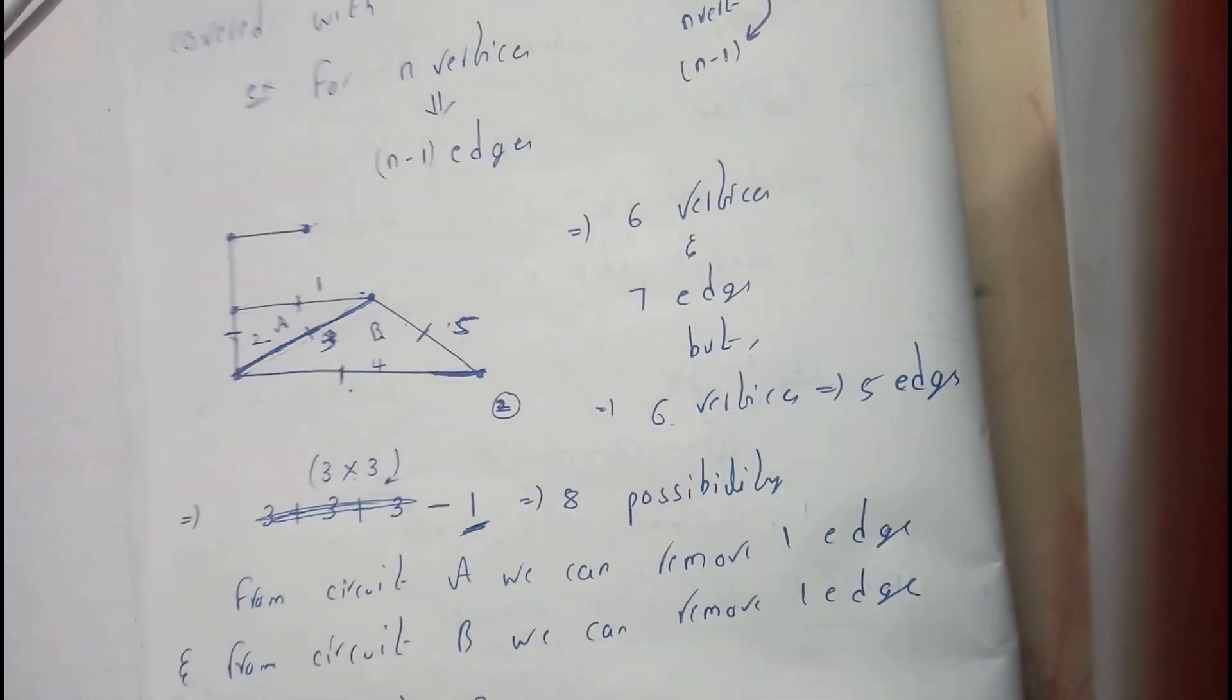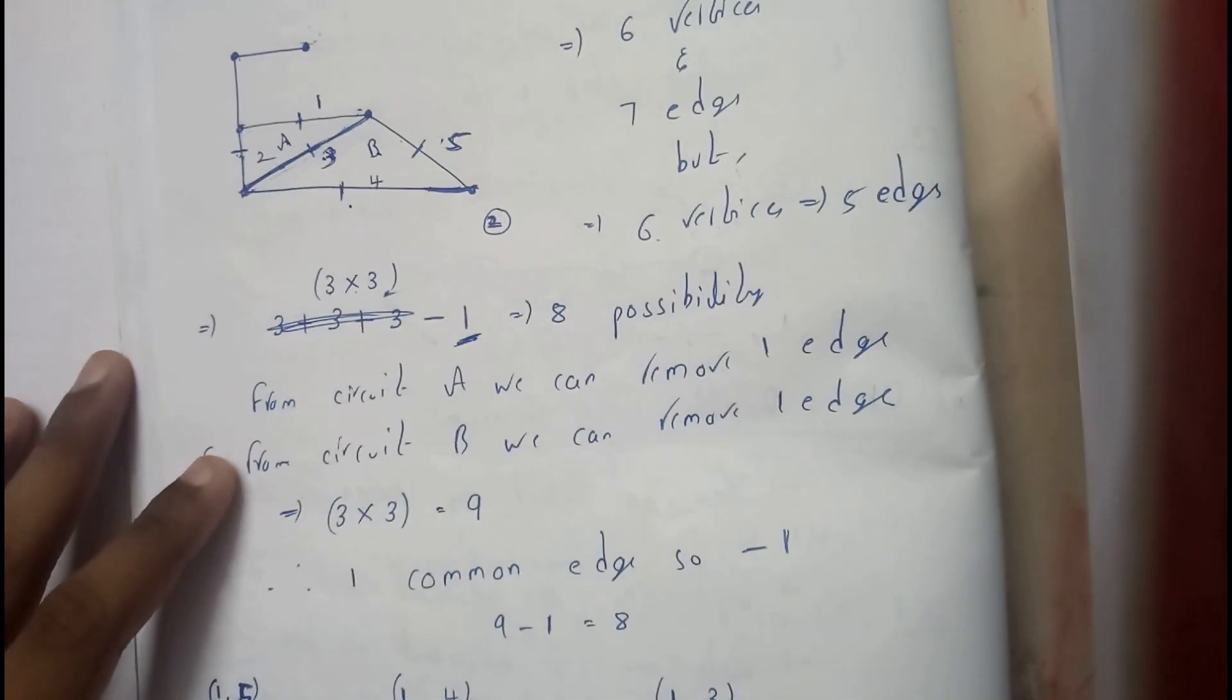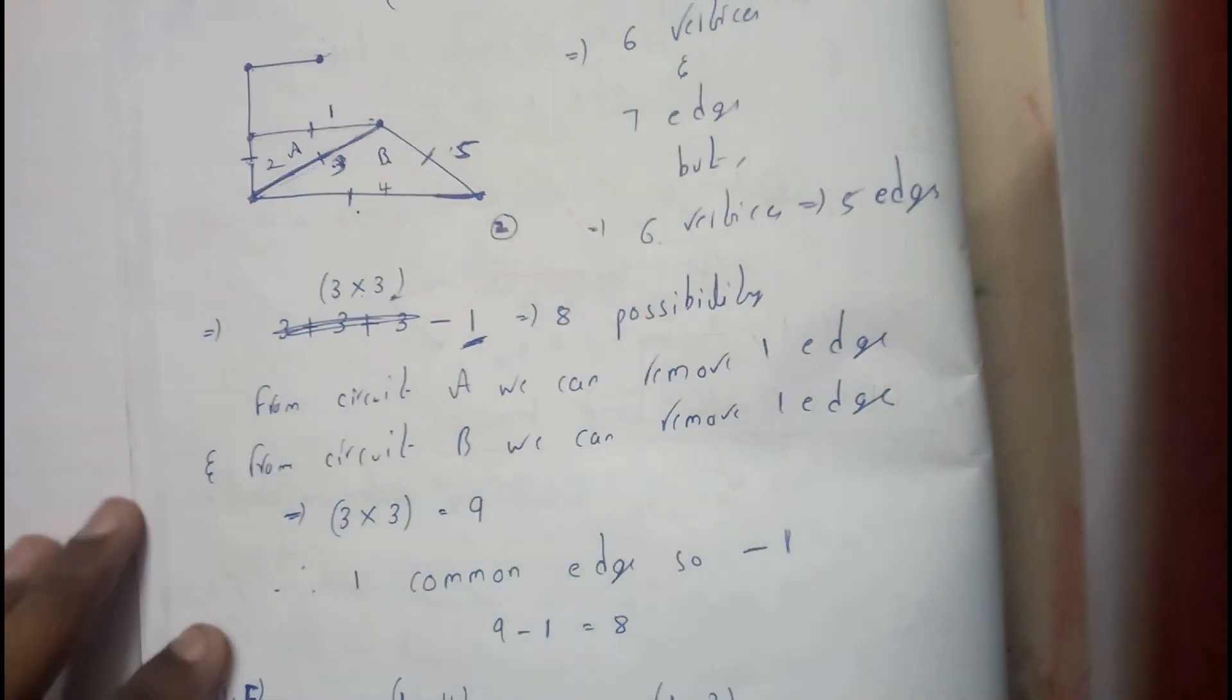So 9 minus 1, that is equal to 8 - totally we are having 8 possibilities. So this is the better way to explain like this in terms of diagrams.